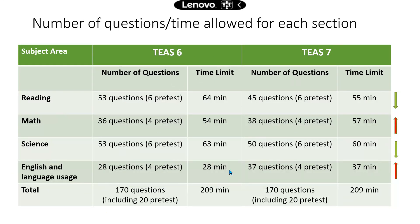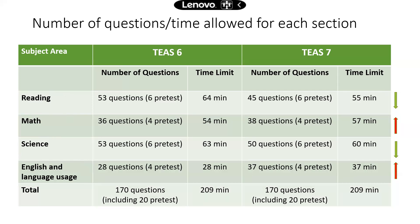I made a comparison table to help you visualize the changes in the number of questions for each of the four subject areas. For reading and science, there are fewer questions — I have green down arrows to indicate the decrease. For math and English, you get a few more questions. I suspected that some reading topics may have been moved to the English and language usage section, but that's just my suspicion — I'll have to spend some time comparing the two study manuals to be sure. It seems a little unlikely that they would drop a lot of reading questions, so my guess is some of that is merged into the language usage section.